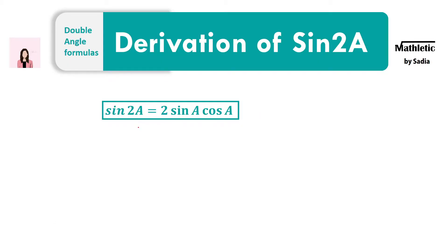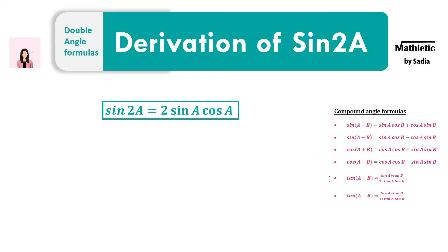This is the double angle formula for sine. Sine 2a is 2 sine a cos a. To derive this formula, we need to use the compound angle formula. I have already discussed the six compound angle formulas in my last video, so I will add the link in the description. We need to use the first one: sine(a + b) equals sine a cos b plus cos a sine b.